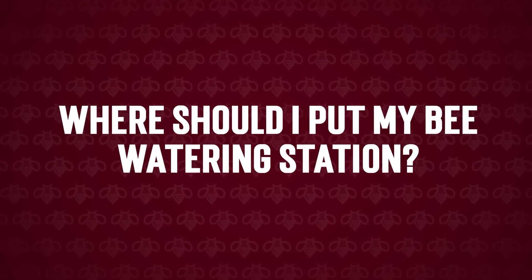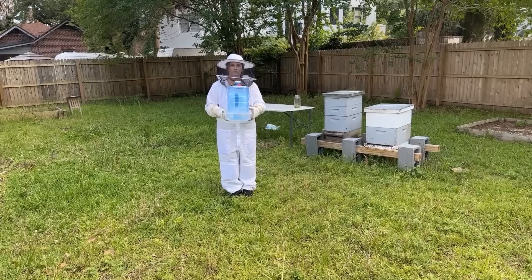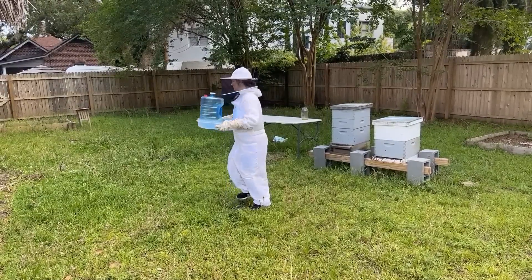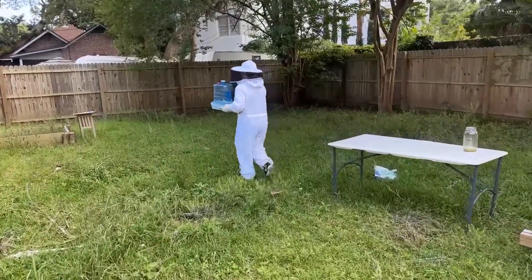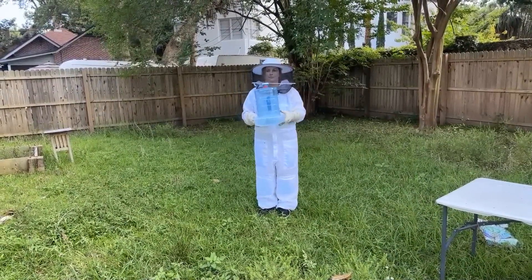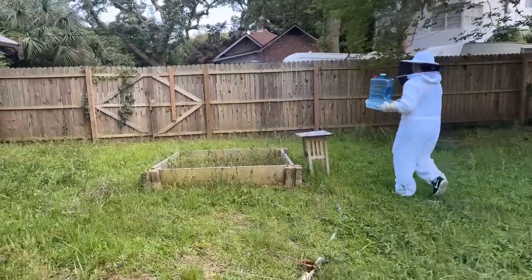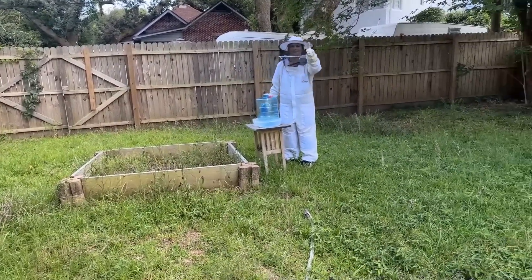Where should I put my bee watering station? Close, but not too close, as bees may get confused in communicating the water source to their fellow worker bees if it's placed too close to the hive. Within 100 feet of your hive is generally a good rule of thumb and preferably around their foraging area but not too close to any high foot traffic areas is a good spot to put your station.